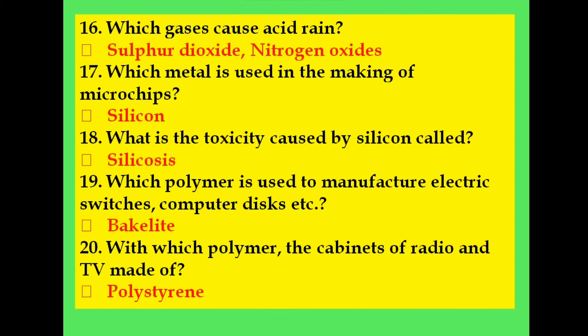Which toxic element present in automobile exhaust? Lead. Which gases cause acid rain? Sulfur dioxide and nitrogen oxide. Which metal is used in the making of microchips? Silicon.